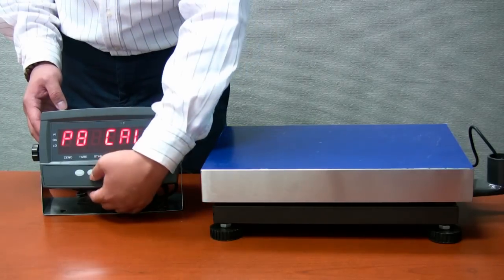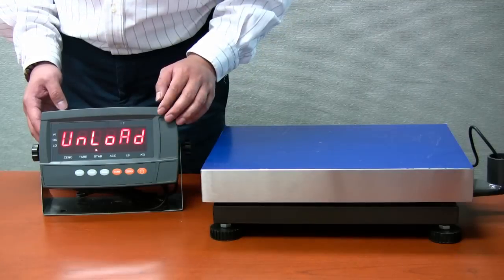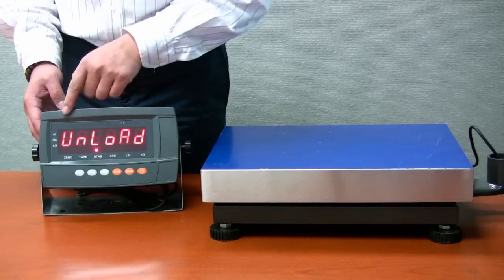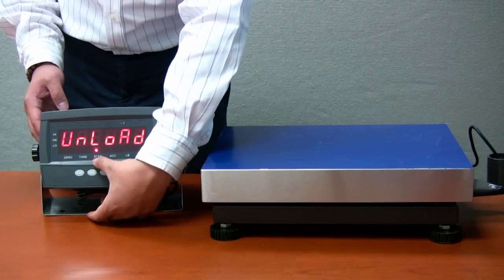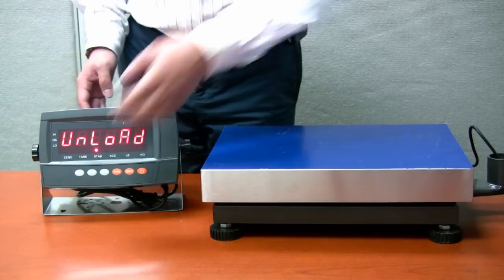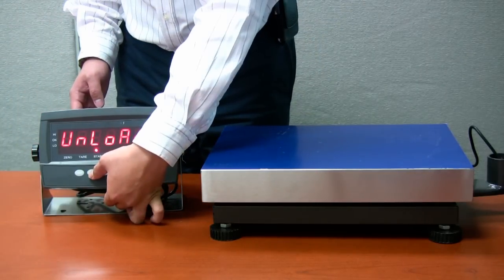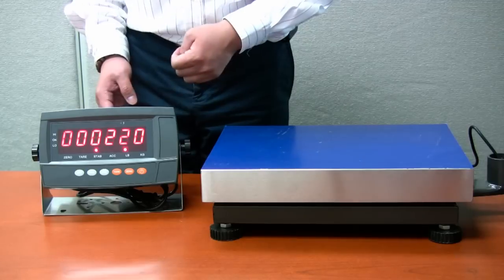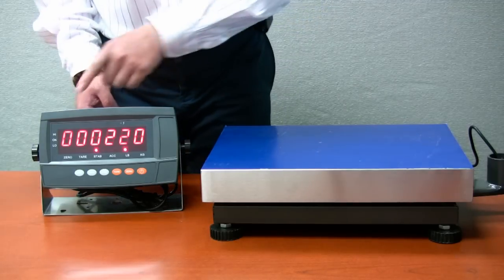Press function key and the indicator will show unload. Make sure that the indicator's staple light is on and that the scale is empty. Press function key.